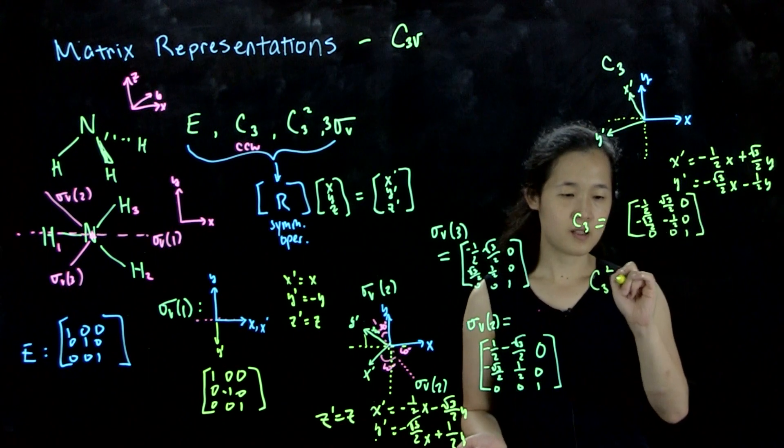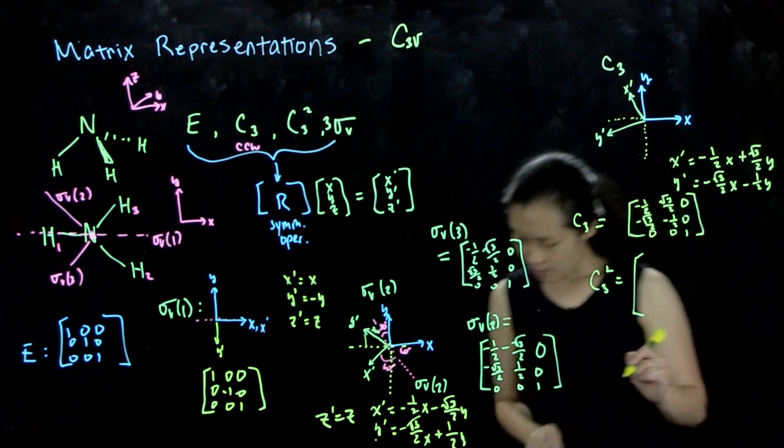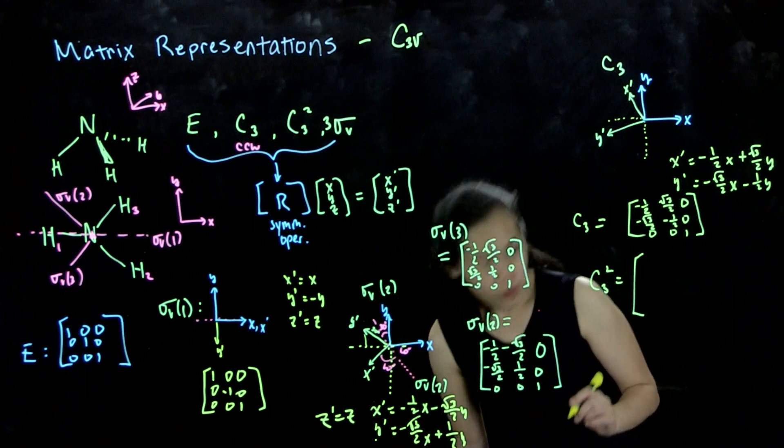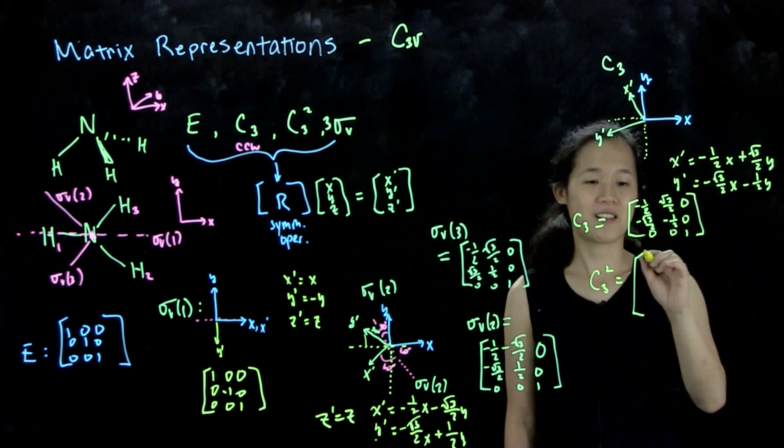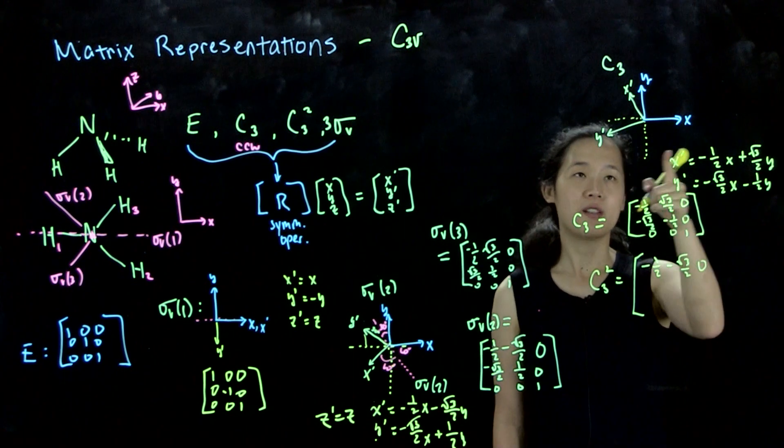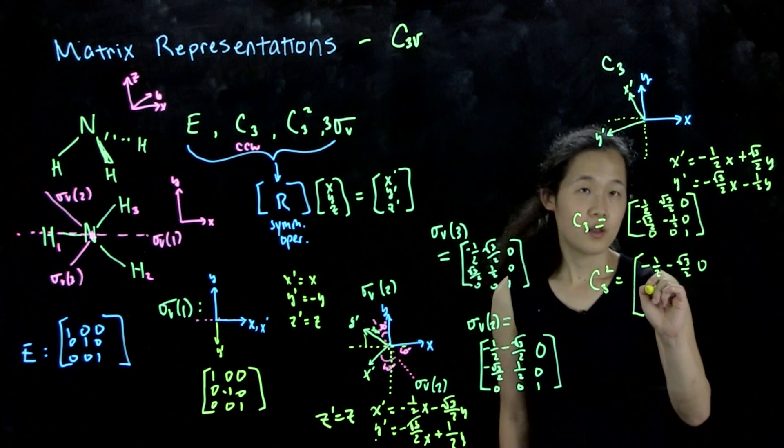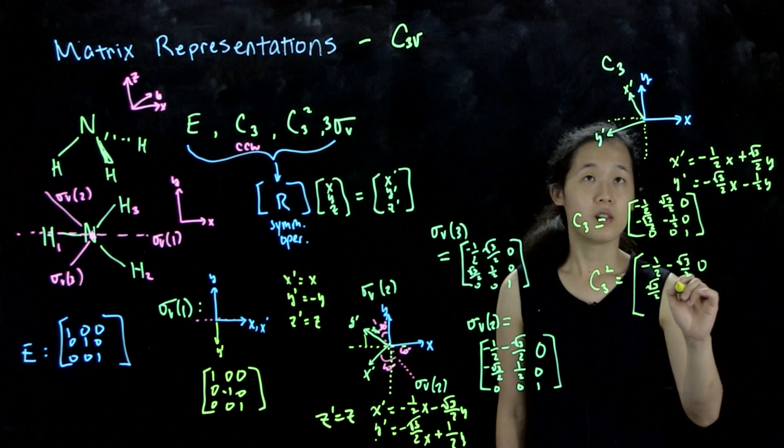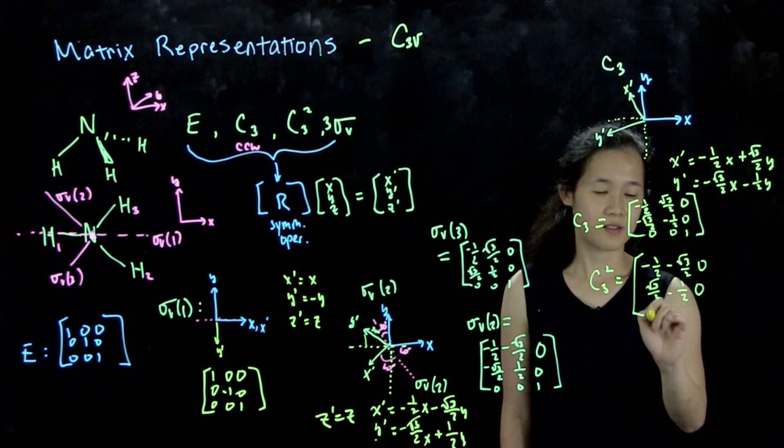And then C3 squared, if we can rotate another 120 degrees, this is going to be equal to, so this is 60 degrees, negative one-half, negative root 3 over 2, zero. This rotates 120 degrees over here. So this will be root 3 over 2, negative one-half, zero, zero, zero, one.